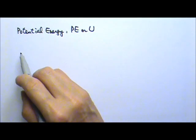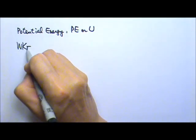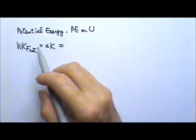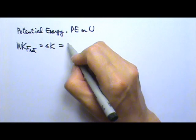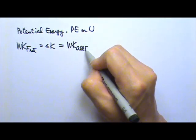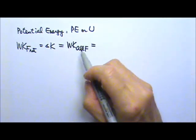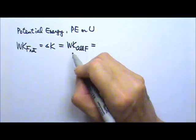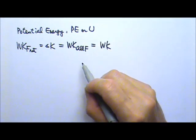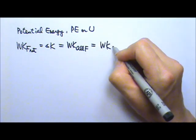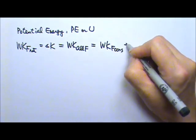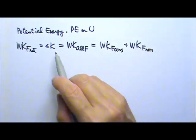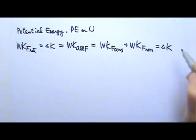We're going to start from the work-energy theorem: the work done by the net force equals the change in kinetic energy. The work done by the net force is also the work done by all of the forces added together. Since we divided forces into two kinds — conservative and non-conservative — we can divide the work into the work done by all conservative forces and the work done by all non-conservative forces, and this still equals delta K.